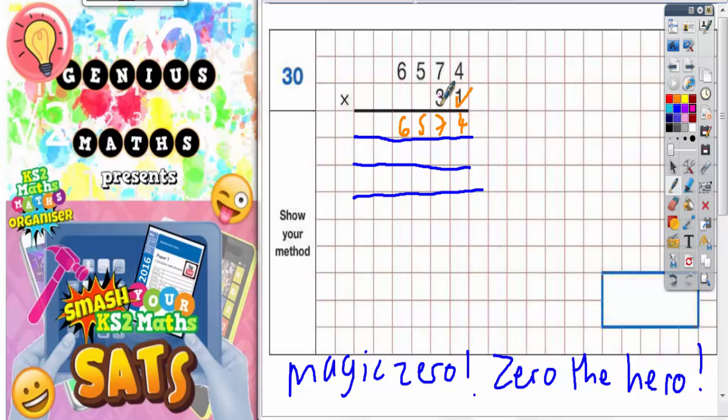Now there's a magic trick you can do to multiply by thirty and that is to put a magic zero in and then just times by three and it has the same effect as times it by thirty. So here's the zero the hero or the magic zero right here. Now just times by three.